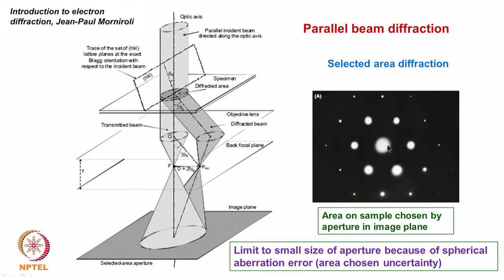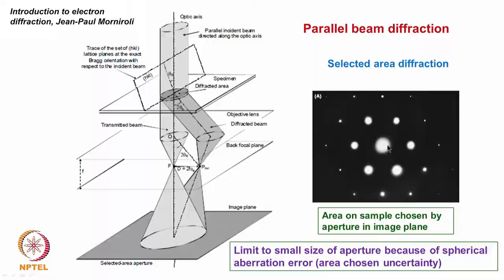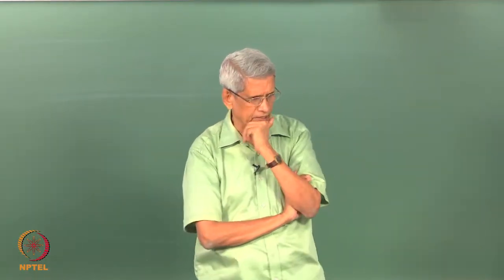Looking at this pattern: under kinematical conditions, only single scattering takes place, so the central spot should be very strong and all diffracted spots should be really weak. But here almost all the spots are equally strong. This happens because of dynamical scattering or multiple scattering — the transmitted beam contributes to diffraction and the diffracted beam contributes back to the transmitted beam.